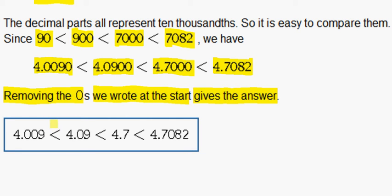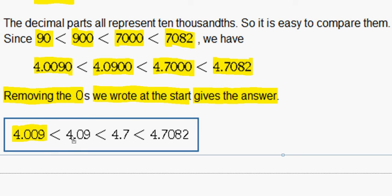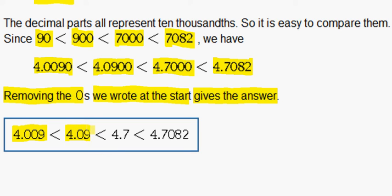So we take out our zeros and we get 4.009, 4.09, 4.7 and 4.7082.